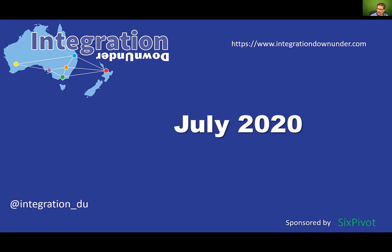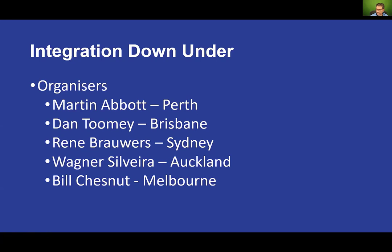Welcome, everyone, to the July Integration Down Under. My name is Bill Chestnut, and I'm one of the organizers for the Integration Down Under. The other organizers are Martin from Perth, Dan from Brisbane, Renee from Sydney, and Wagner from Auckland.